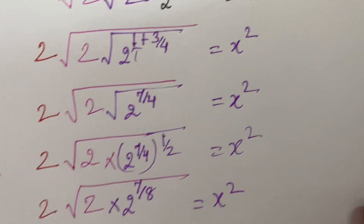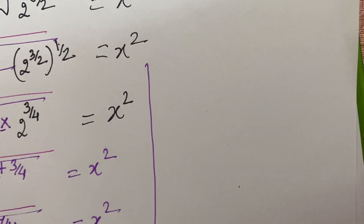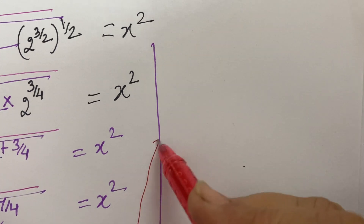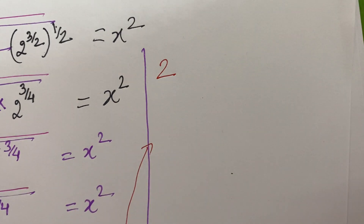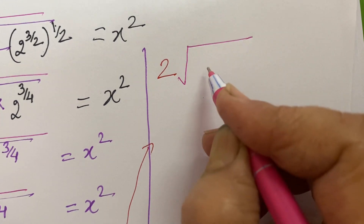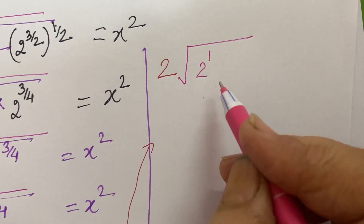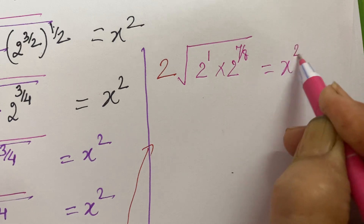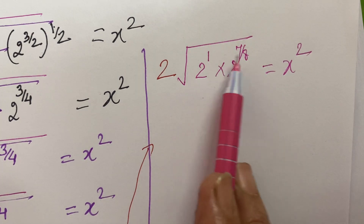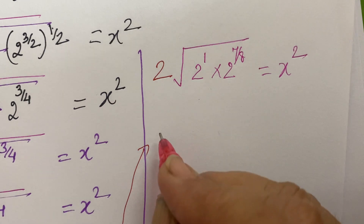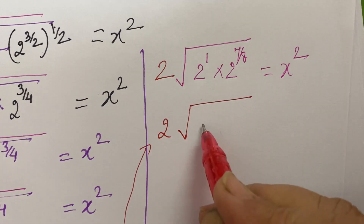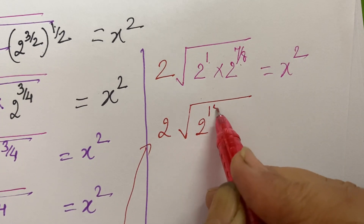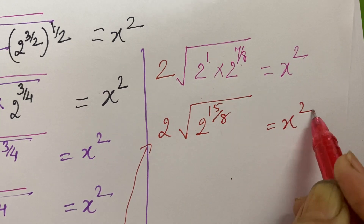Now we simplify again. So it is 2 into root 2 and 2 raised to the power 1 multiplied by 2 raised to the power 7 upon 8, equal to x square. Now again apply the same law, so you get 2 root of 2 raised to the power — 8 ones are 8, 8 plus 7 is 15 — 15 upon 8 is equal to x square.